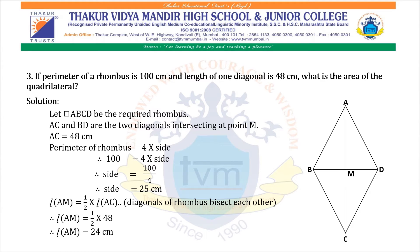Length AM = half into length AC, because diagonals of a rhombus bisect each other. Therefore, AM = half into 48 = 24 cm.